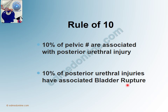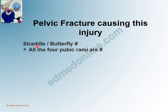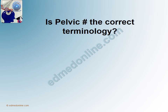Which type of pelvic fracture causes posterior urethral injury? A straddle fracture, also called a butterfly fracture, where all four pubic rami are disrupted, is one type. Likewise, a Malgaigne fracture — where there is fracture of the osteopubic rami along with that of the sacrum and the sacroiliac joint — can also cause this injury.